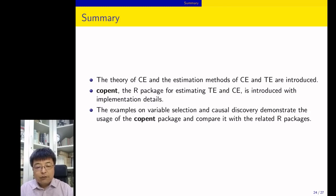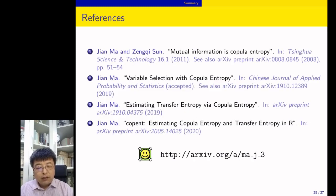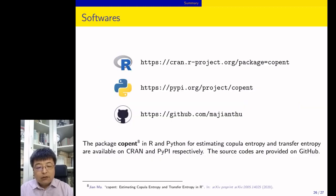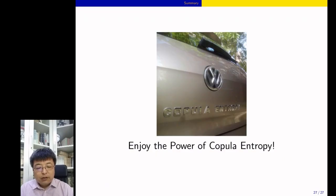In summary: I introduced the background of the COPENT package, the implementation, and two examples demonstrating usage and comparison with other packages. The COPENT package in R and Python is available on CRAN and PyPI respectively, and also on GitHub. And let me show my luxury car — a golf cart I've named Copula Entropy. Copula entropy really gives me a lot of fun every day, and I hope you can enjoy it too with the COPENT package. Thank you for listening.